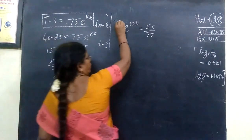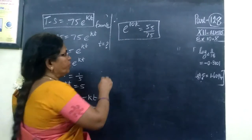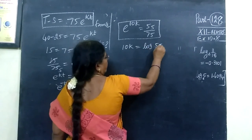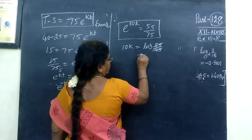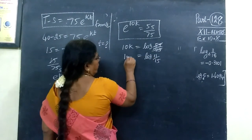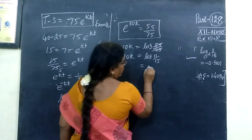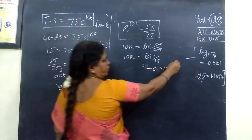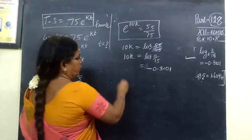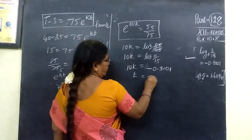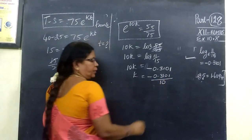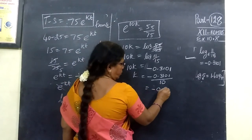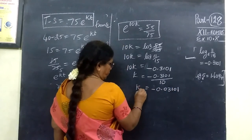We know e^(10k) equals 55 by 75. Cancelling, 10k equals log(55/75), which simplifies to log(11/15). This gives minus 0.3101, so k equals minus 0.3101 divided by 10. Therefore k equals minus 0.0310. This is the k value.